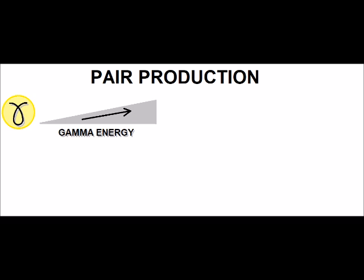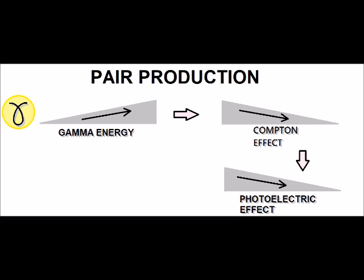With increasing gamma ray energy, the Compton effect decreases, the photoelectric effect goes down as well, whereas pair production goes up.